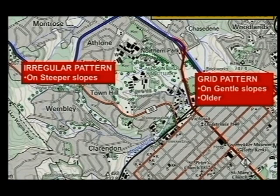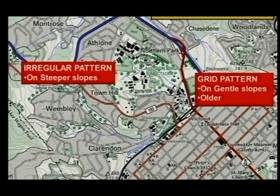If you look here, you see there's a contour, and we see many contours here in Montrose. Look at Wembley — lots of contours there as well. This means the slopes are much steeper there, so that is why we've got the irregular pattern — to prevent steep streets on your slopes.